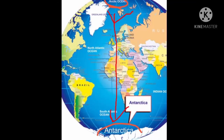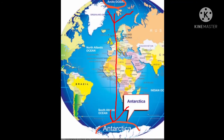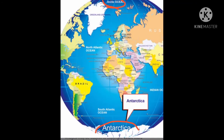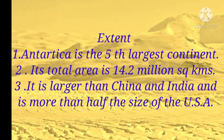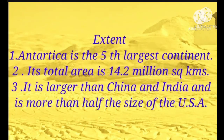You can see this in the picture, children. The Arctic Ocean has been marked in red. Antarctica is down and the Arctic Circle is just opposite to it in the north. That is the unique position of Antarctica. The extent of Antarctica — it is the 5th largest continent, with a total area of 14.2 million square kilometers. It is larger than China and India, and more than half the size of the USA.